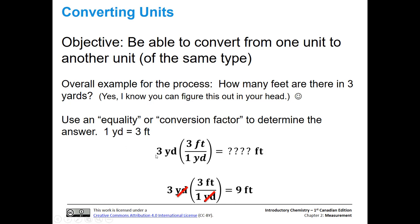Here's our three yards, and now we have three feet is equal to one yard, and we're going to get an answer. What I want you to notice is that three yards — because yards is on the bottom in your conversion factor — those units are going to cancel out. Basically, what you have here is three divided by one, which is three, times three feet. There's a unit still hanging around, so our final answer is nine feet. We got rid of yards and ended up with feet.